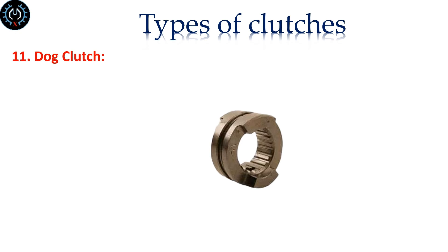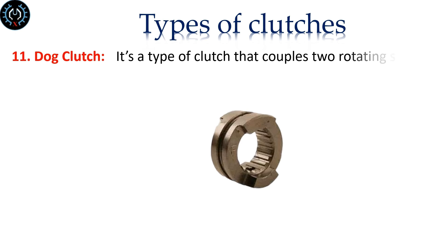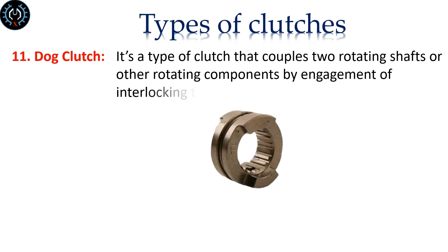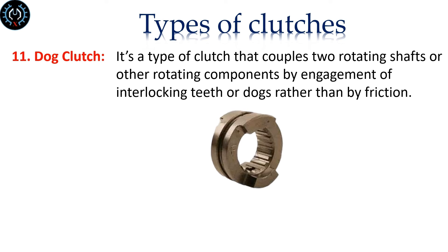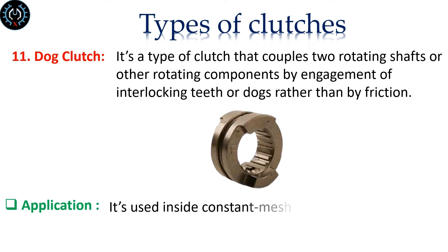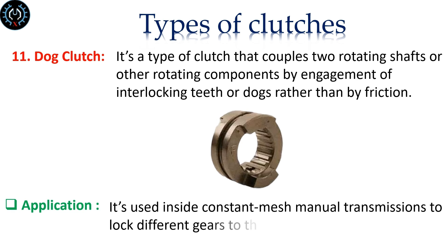Dog clutch. It's a type of clutch that couples two rotating shafts or other rotating components by engagement of interlocking teeth or dogs, rather than by friction. It's used inside constant mesh manual transmissions to lock different gears to the rotating input and output shafts.